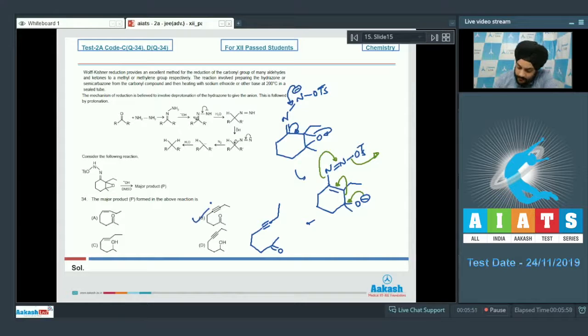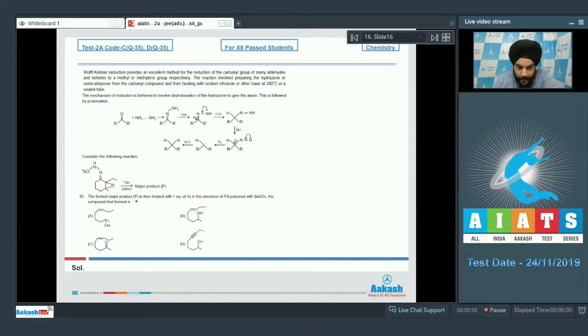Question 35: The major product P is then treated with one equivalent of H2 in the presence of Pd poisoned with BaSO4. In the previous step we had this structure. Now this is allowed to react with H2 Pd in the presence of BaSO4. This is going to lead to the formation of a cis-alkene. This is the Lindlar's catalyst.